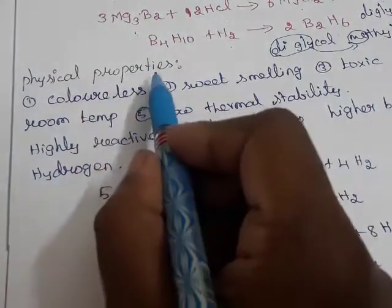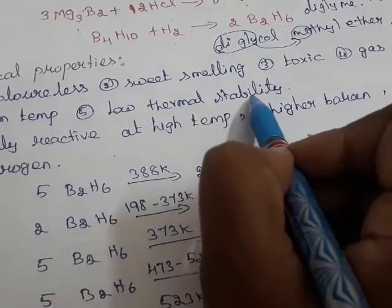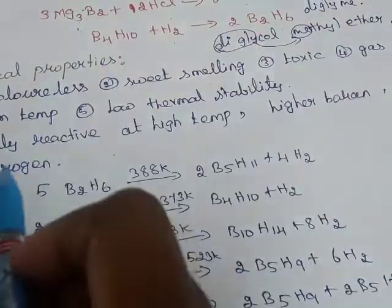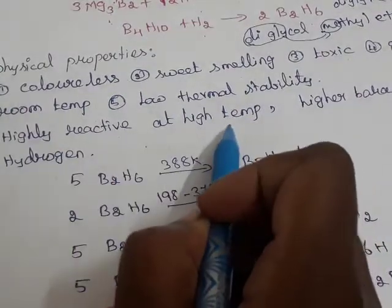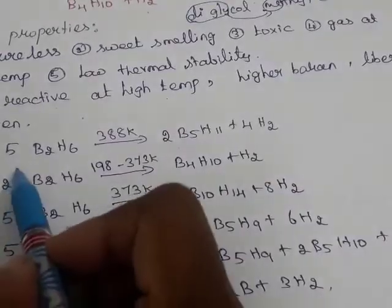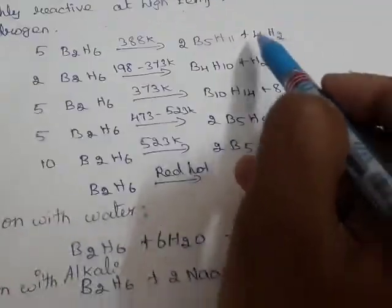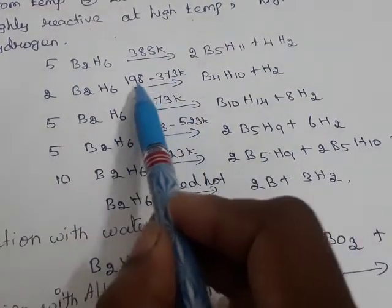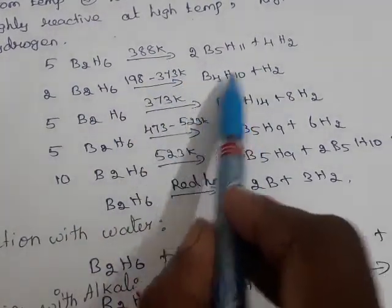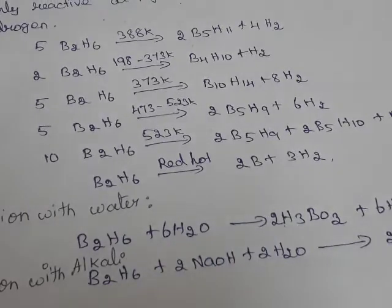The physical properties of Diborane: Diborane is a colorless, sweet-smelling, and toxic gas at low room temperature. It has low thermal stability, but it is highly reactive at high temperature. At high temperature, it forms higher boranes and liberates hydrogen. For example, 5 molecules of Diborane react at 388 Kelvin to form higher boranes and liberate hydrogen. B2H6 reacts at red hot conditions to decompose into boron and hydrogen.